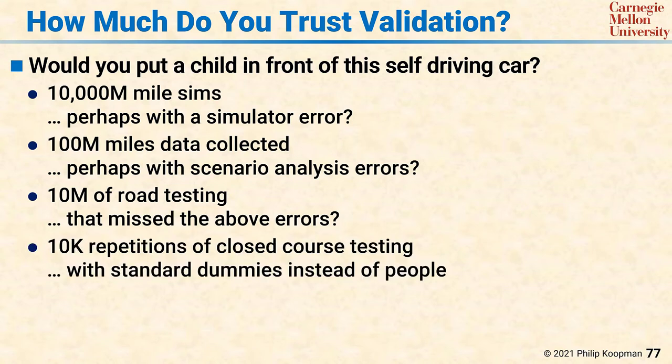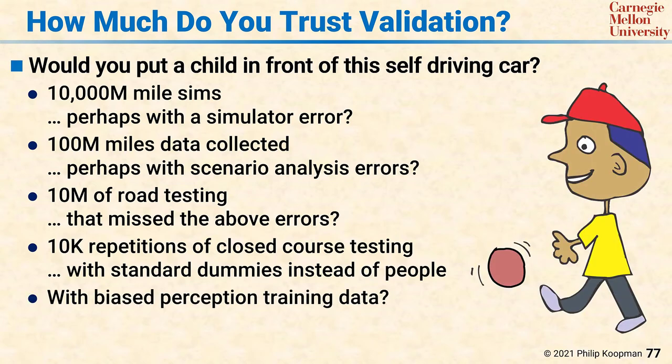And you did 10,000 repetitions of various high-risk scenarios on closed-course testing, but you used standard dummies instead of people, and your perception system is really good at finding dummies but not so good at certain configurations of people. And all that was biased perception training data that maybe had no instances of yellow shirts in it.